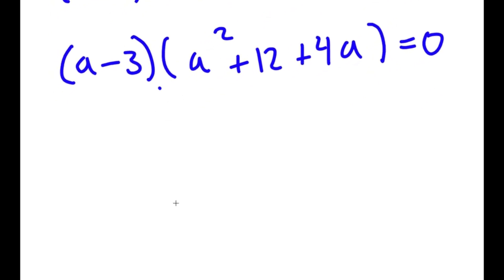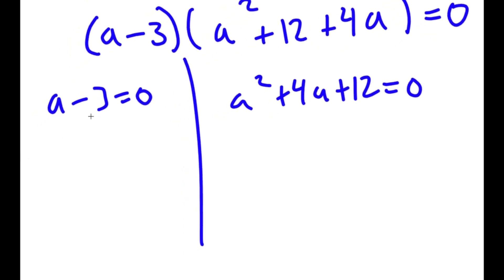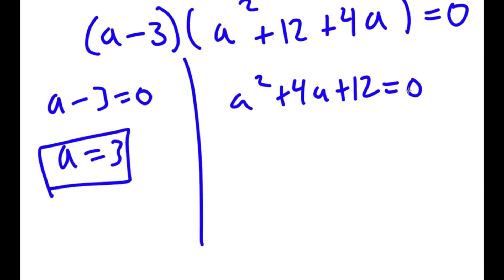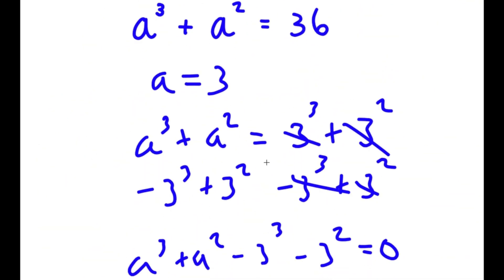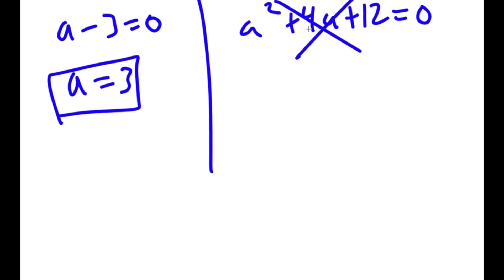This gives me two equations: a minus 3 equals 0, and a squared plus 4a plus 12 equals 0. From the first, a equals 3. For the second, using the quadratic formula, you get the square root of a negative number, so there is no real solution. Therefore, a equals 3 is our only solution.